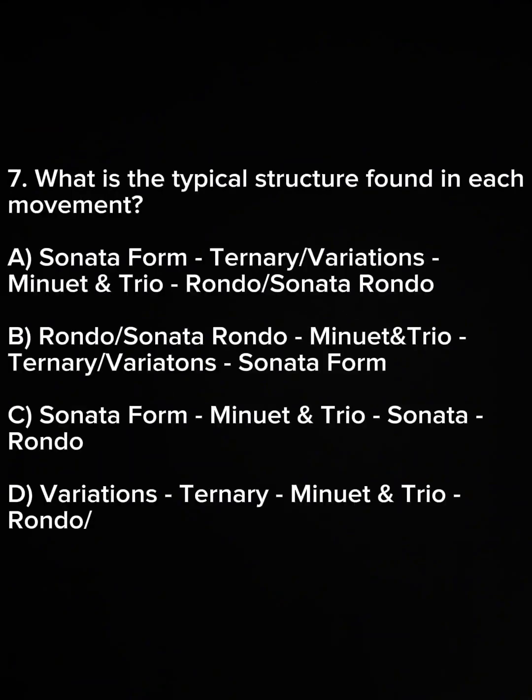Question 7. What is the typical structure found in each movement? A. Sonata form, ternary, or variations; minuet and trio; rondo or sonata rondo. B. Rondo or sonata rondo; minuet and trio. C. Sonata form; minuet and trio; sonata rondo. D. Variations; ternary; minuet and trio; rondo.